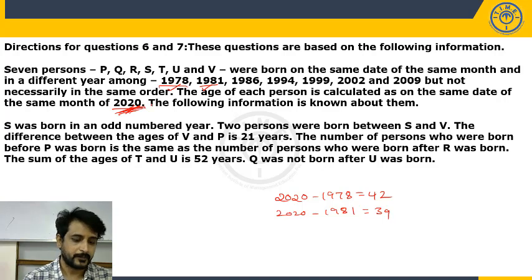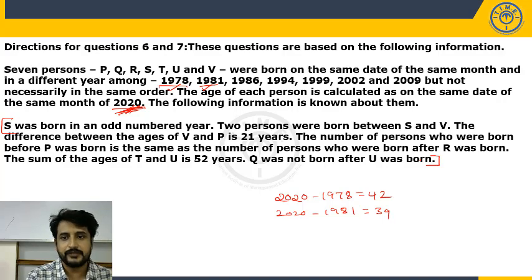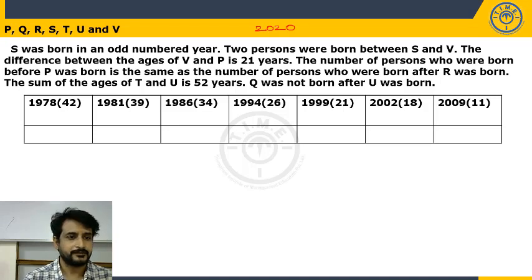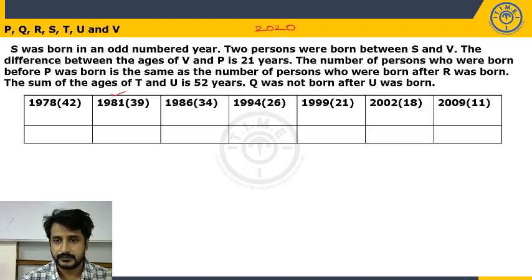Writing out the years and their corresponding ages: 42, 39, 34, 26, 21, 18, 11. Clue 1: S was born in an odd-numbered year. The odd years available are 1981, 1999, and 2009 — three possibilities. Let's move to clue 2: two persons were born between S and V.